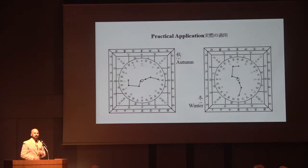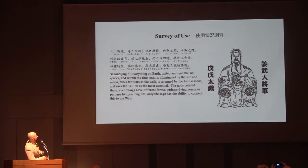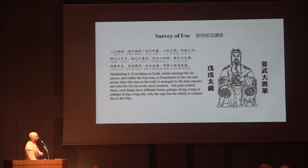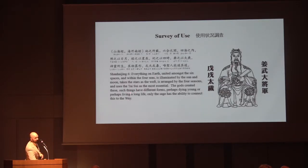Most people don't realise we're using this all the time when we do feng shui. This is the Tai Sui for this year. From the Shan Hai Jing — the Mountain and Seas classic, an early geography book whose most notable commentator was Gokun, our grandfather of feng shui: 'Everything on earth, united amongst the six spaces — forwards, backwards, left, right, up and down — within the four seas, illuminated by the sun and the moon, takes the stars as the weft, is arranged by the four seasons, and uses the Tai Sui as the most essential. Only the sage has the ability to connect this.' So if you're sagely, you know how to use the Tai Sui because it's really important.